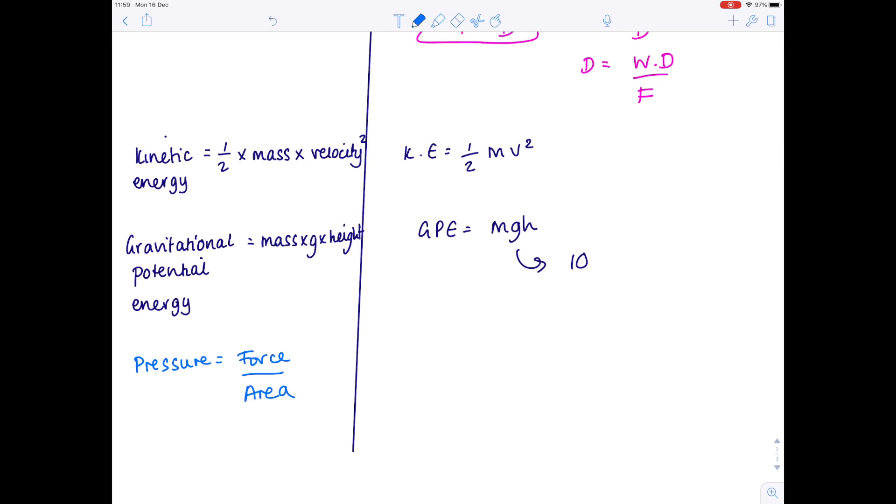Next step, pressure equals force divided by area. This fits very nicely into a triangle. FAP. Now, because it vaguely sounds like a word, that's quite easy for me to remember. So force equals area times pressure. Area equals force divided by pressure. And remember when they ask you to provide equations, it doesn't really matter what version you give it in. As long as it's right, it won't be a problem. And then lastly, pressure equals force over area. That will probably be the one that they ask you about the most.